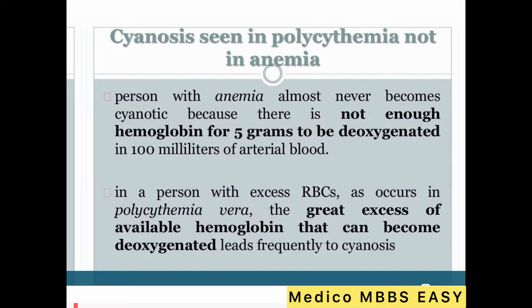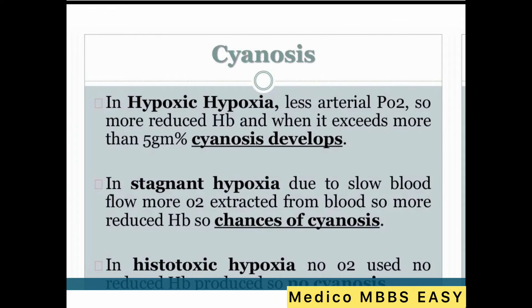In a person with excess red blood cells, as occurs in polycythemia, there is a great excess of available hemoglobin that can become deoxygenated, frequently leading to cyanosis. In hypoxic hypoxia, there is less arterial oxygen pressure, so more reduced hemoglobin, and when it exceeds more than 5 grams, cyanosis develops. In stagnant hypoxia, due to slow blood flow, more oxygen is extracted from blood, so more reduced hemoglobin — higher chance of cyanosis. In histotoxic hypoxia, no oxygen is used, so no reduced hemoglobin is produced, and therefore no cyanosis.